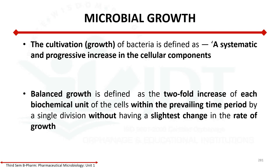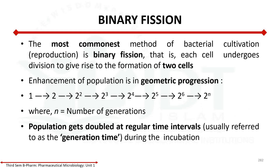In fermentation, we use metabolic products to improve the growth of microorganisms. Growth proceeds by binary fission. Binary fission means one cell becomes two, two becomes four, and so on — two raised to n. This is how microorganisms grow, and it is called exponential phase or geometrical progression.